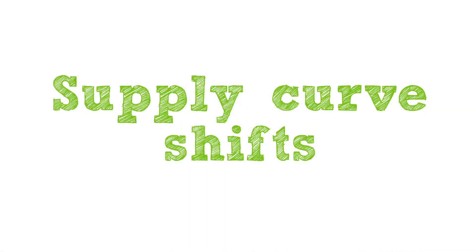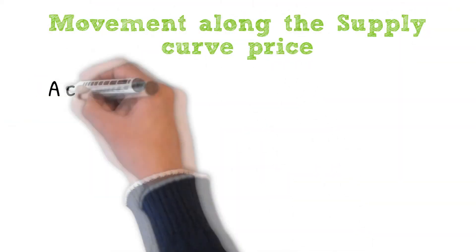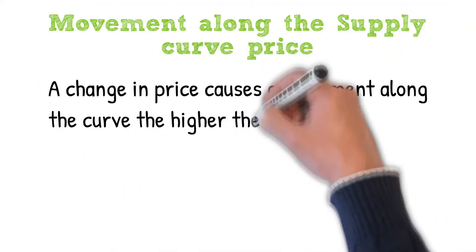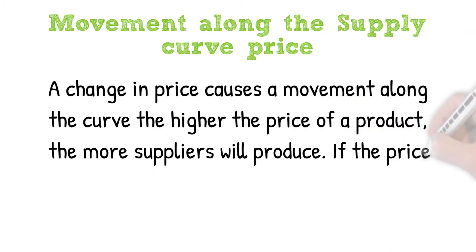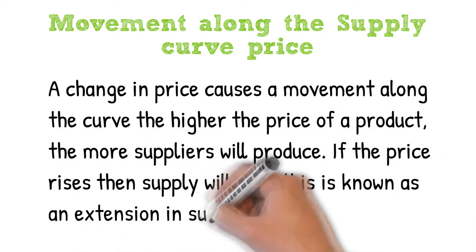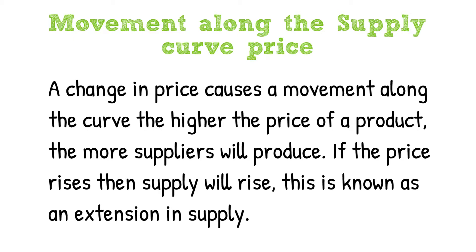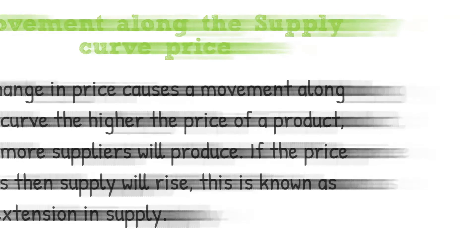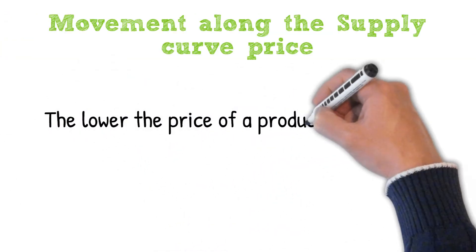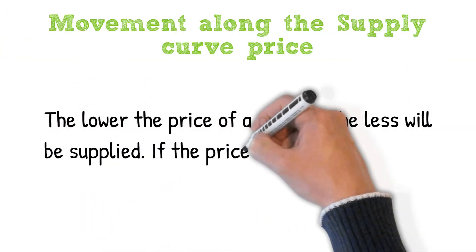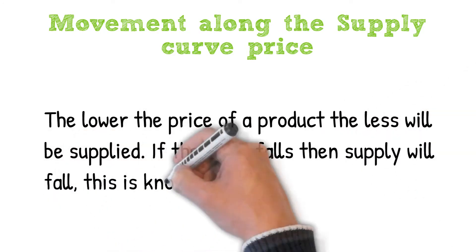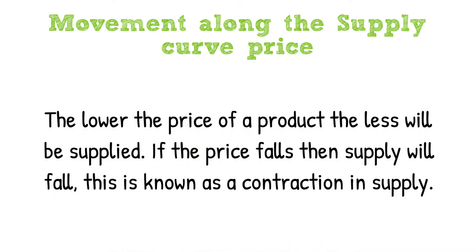Just like the demand curve, let's look at supply curve shifts. A change in price causes a movement along the curve. The higher the price of a product, the more suppliers will produce — if the price rises then supply will rise; this is known as an extension in supply. The lower the price of a product, the less will be supplied — if the price falls then supply will fall; this is known as a contraction in supply.